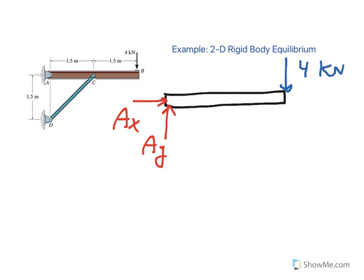And what's happening at C? So the first thing that comes to your mind is C is just a pin, so I'm going to put a CX and a CY here. But you see there is a problem with this. The problem is that you have now four unknowns: AX, AY, CX, CY.